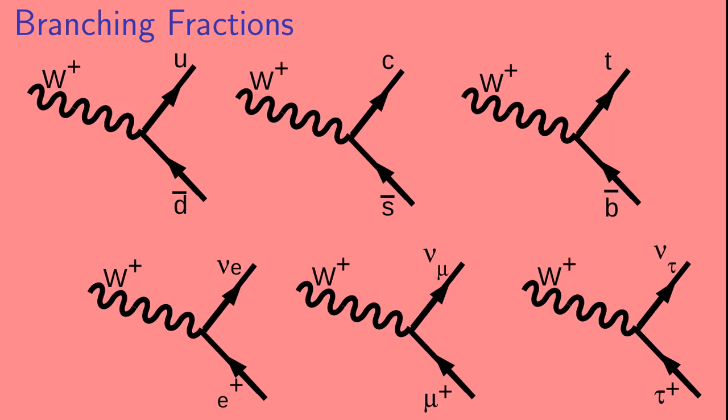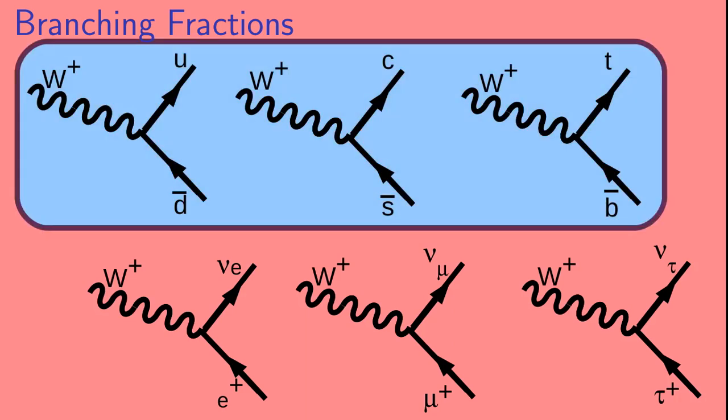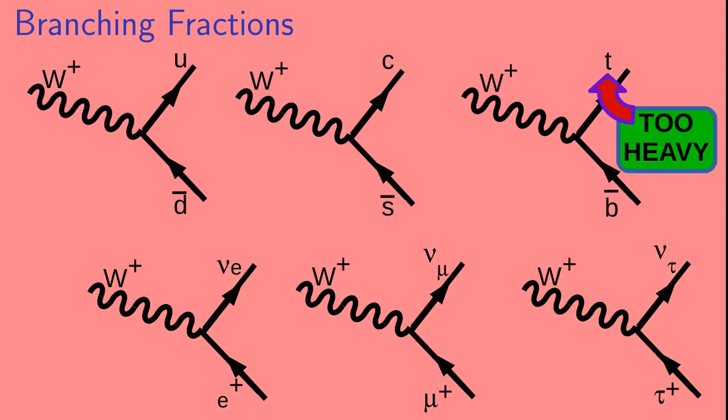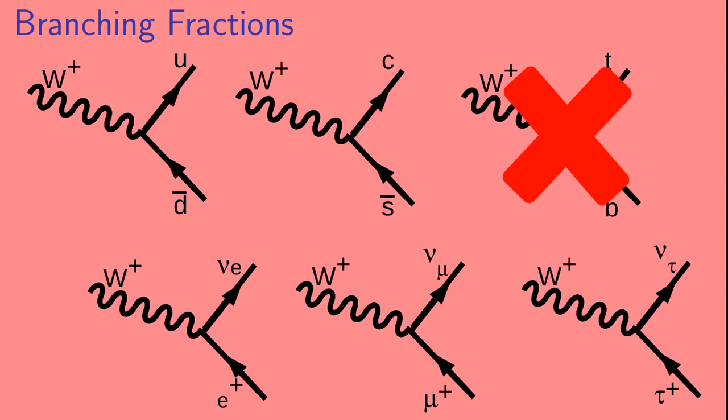Okay, so here we show diagrams for the process of a W plus disintegrating into a quark-antiquark or lepton-antilepton pair. The diagrams for disintegration into quarks are in the top row, and those for leptons are in the bottom. Now, the first thing to mention is that the top quark is heavier, actually much heavier, than the W. So, the W plus basically cannot decay to a top quark and a bottom antiquark. So, that diagram doesn't count. That leaves us with 5.